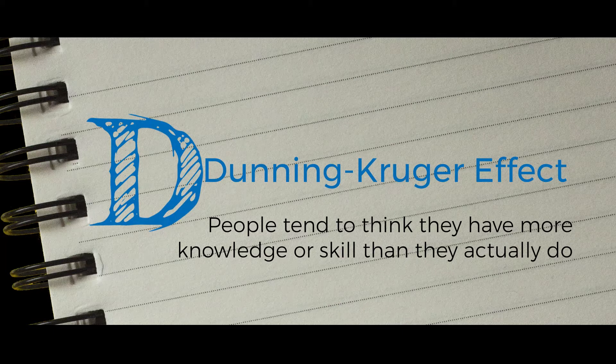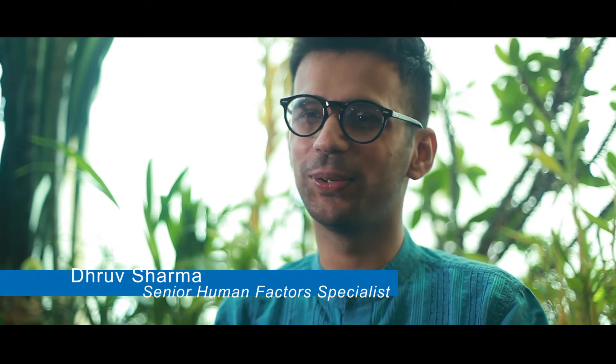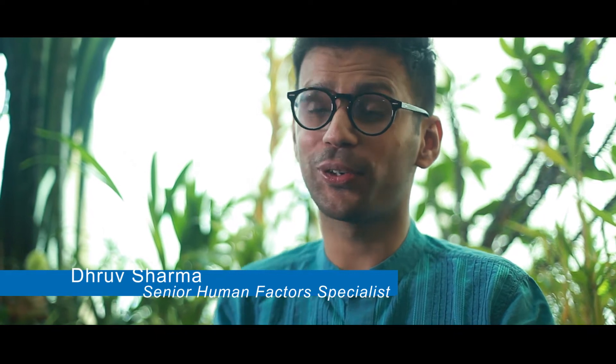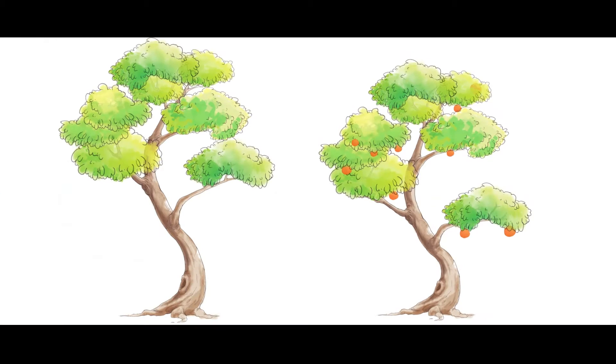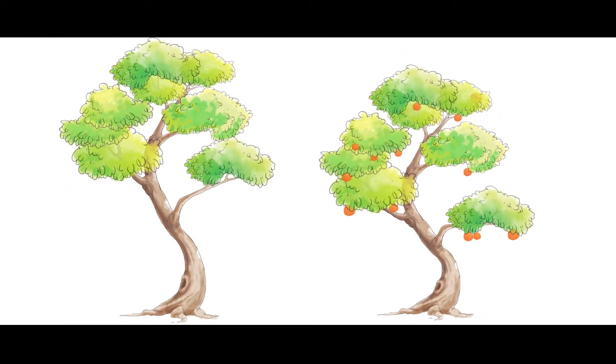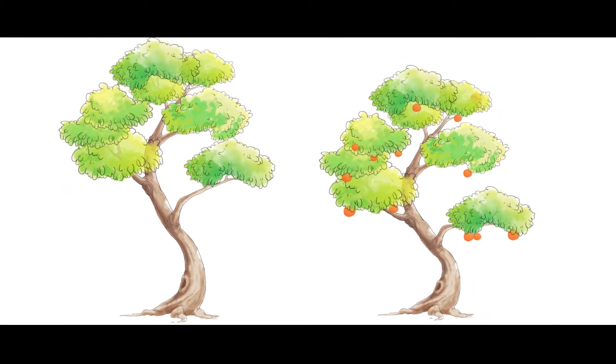If you have ever dealt with someone at work whose performance is poor, and they are not only clueless that their performance is poor but confident that their performance is good, you likely saw the Dunning-Kruger effect in action. Humans are poor judges of their own abilities.